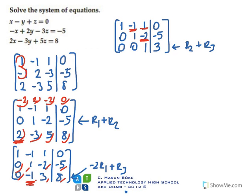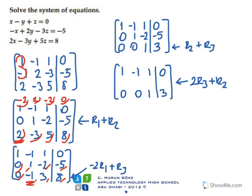To do that, first I will multiply row three by two and add to row two. This way, the result becomes two and six. Adding to row two: zero plus zero is zero; zero plus one is one; two minus two is zero; and six minus five is one.